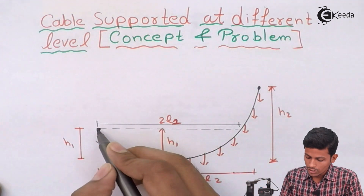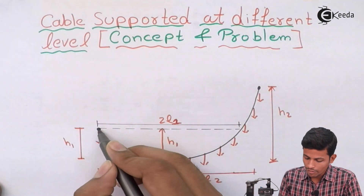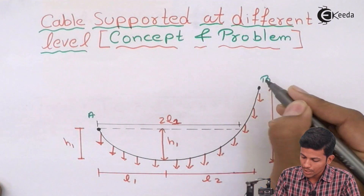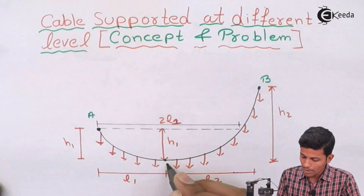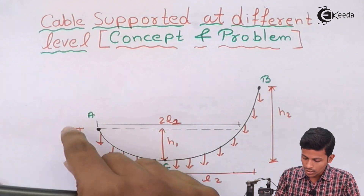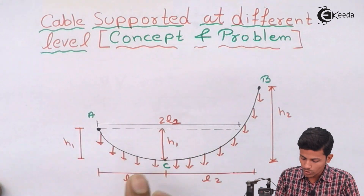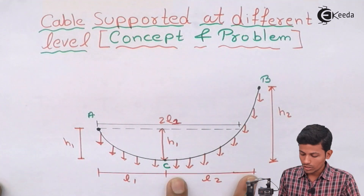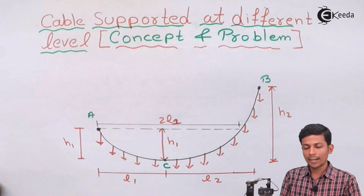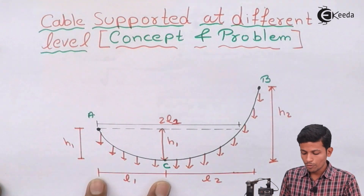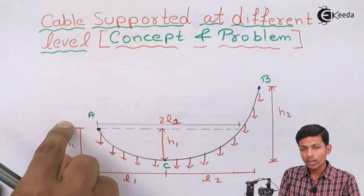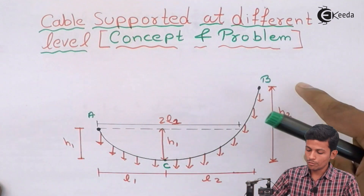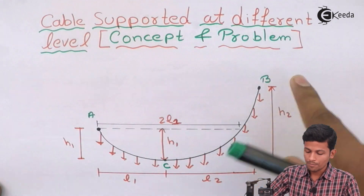Now just observe this diagram. This is your different level setup. This is point A, this is point B, and this is point C. This is your H1, and this will be your L1. If this is your H2, this will be L2. You can also interchange them — if you write L2 on one side, then H2 goes on the other, and similarly for L1 and H1.